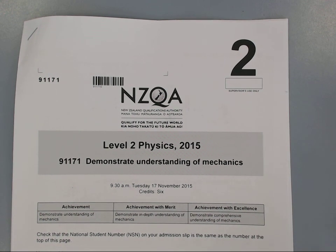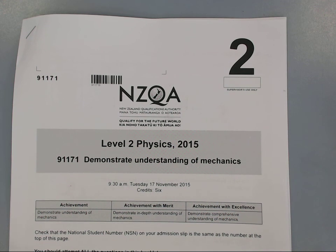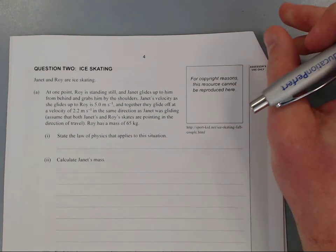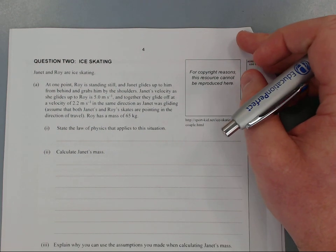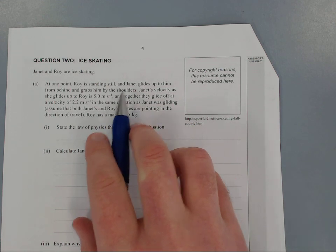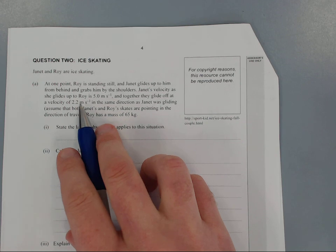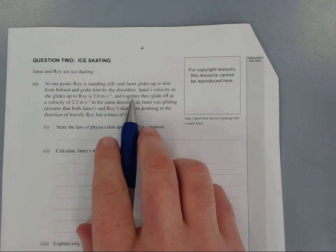For this video I'll be working through Level 2 2015 exam Question 2: Ice Skating. Janet and Rory are ice skating. At one point Rory is standing still, Janet glides up to him from behind and grabs him by the shoulders. Janet's velocity as she glides up to Rory is 5 meters per second.